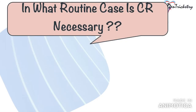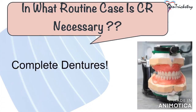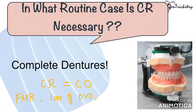In what routine case is centric relation necessary? Complete dentures — because in your edentulous patient you do not have an occlusal guide, so you record the centric relation and then arrange your teeth in centric occlusion. Other cases where centric relation is necessary are full mouth rehabilitation, implant prosthesis with multiple missing teeth, cases where there is no vertical stop resulting in loss of occlusal vertical dimension — for example, a long edentulous span with missing posterior teeth like Kennedy's class 1 or class 2 — or when all the teeth in at least one arch are being treated.